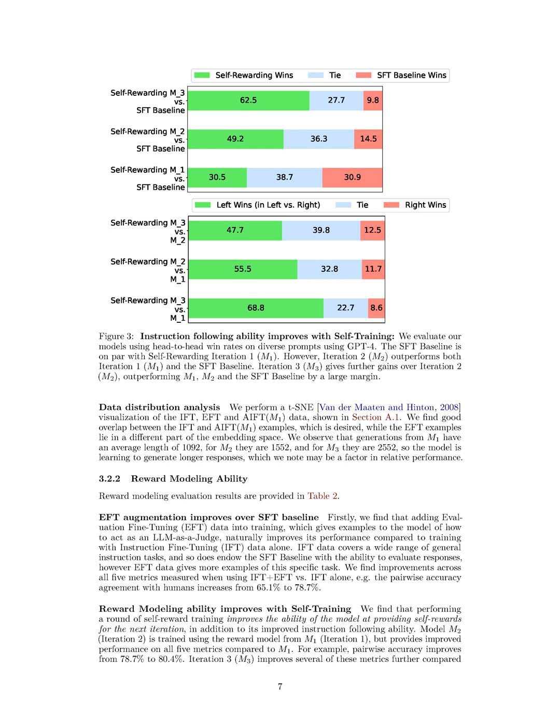In iteration 3, there is a significant improvement over iteration 2, with M3 winning 47.7% of the time compared to only 12.5% for M2 in head-to-head evaluations. The self-rewarding models also perform well on the Alpaca Eval 2 leaderboard, outperforming existing models such as Claude 2, Gemini Pro, and GPT-4-0613.